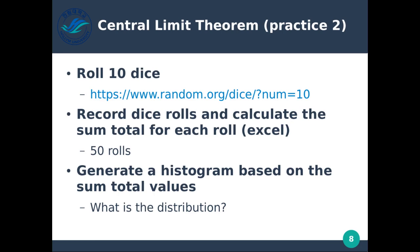Practice two: roll 10 dice using the same virtual die. Record the dice rolls and calculate the sum total for each roll. If we do this 50 rolls — or a minimum of 30 rolls — then we generate a histogram based on the sum total values. What should that distribution be? I think you can probably guess, but I just want to bring home exactly how this works and what kind of information we can actually get out of it.